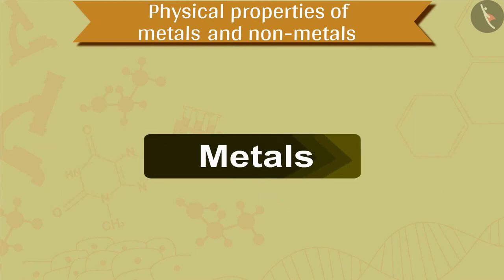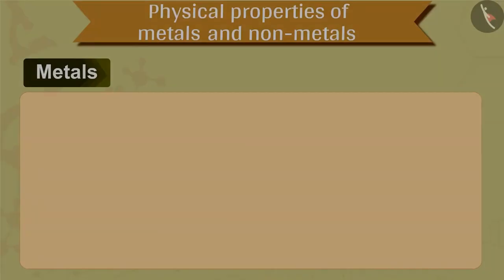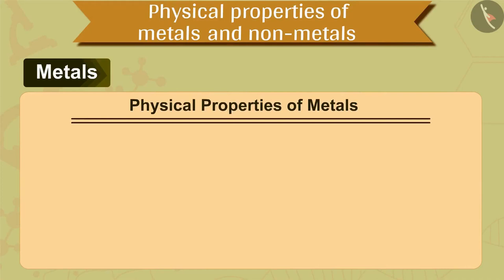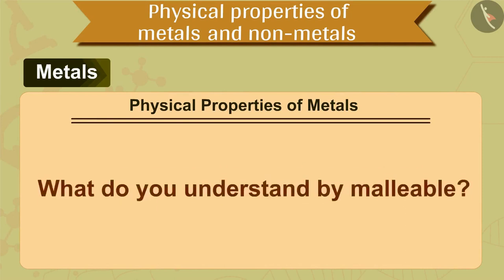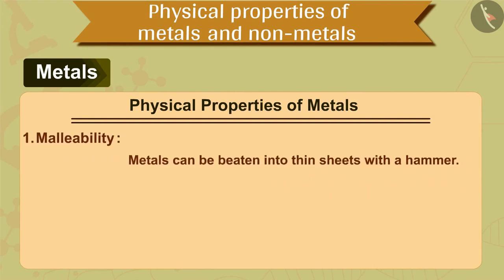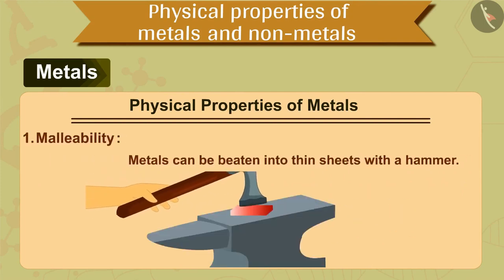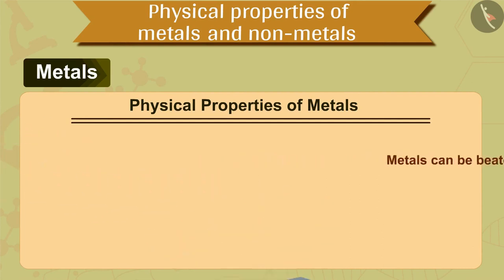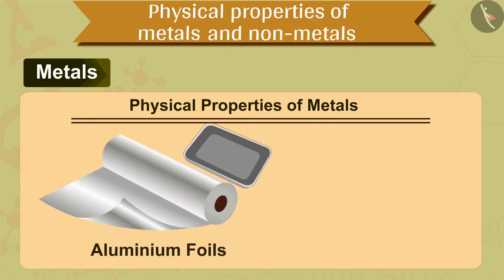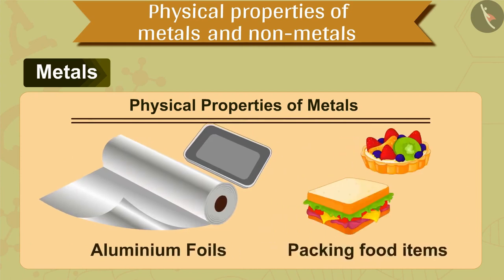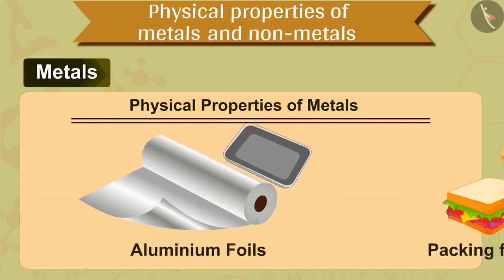First, we will discuss about metals. The first physical property of metals is that metals are malleable. What do you understand by malleable? It means that metals can be beaten into thin sheets with a hammer without breaking it. Gold and silver are the best malleable metals. Aluminium foils are used for packing food items because aluminium is malleable and can be converted into the form of thin sheets.